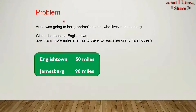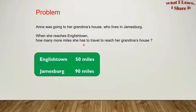Here is a problem to help us understand this. Anna was going to her grandma's house who lives in Jamesburg. When she reaches English Town, how many more miles does she have to travel to reach her grandma's house? English Town is 50 miles and Jamesburg is 90 miles.